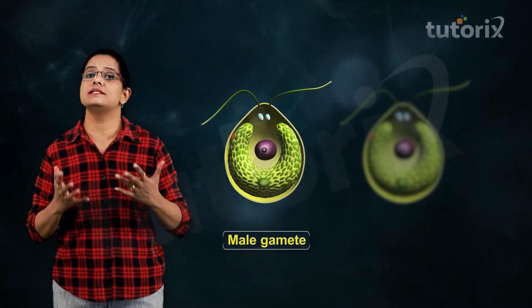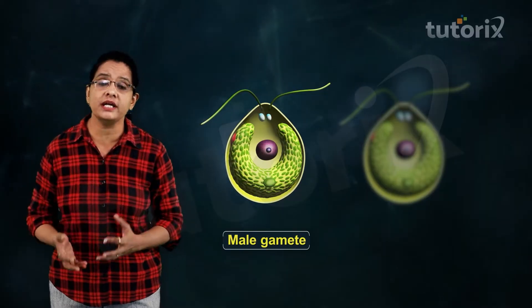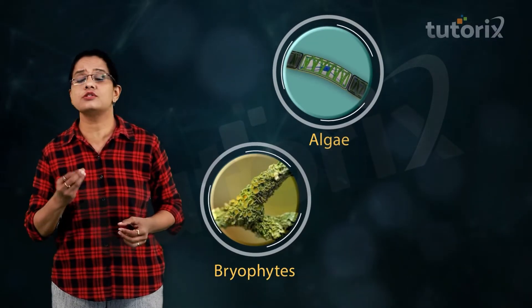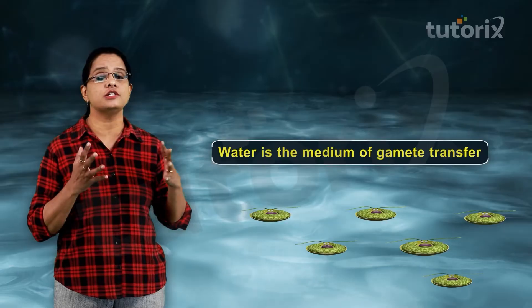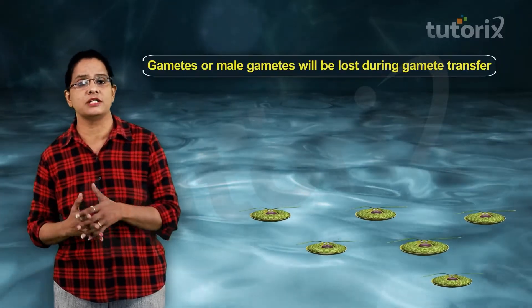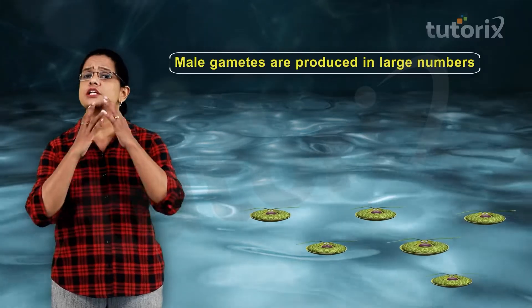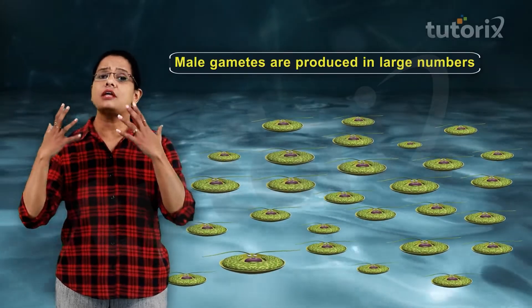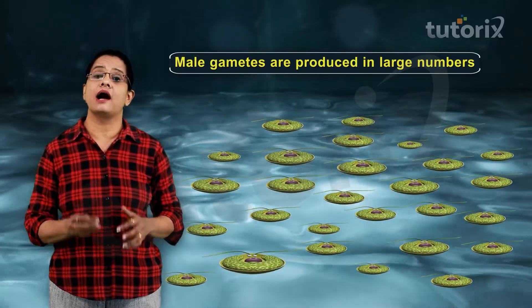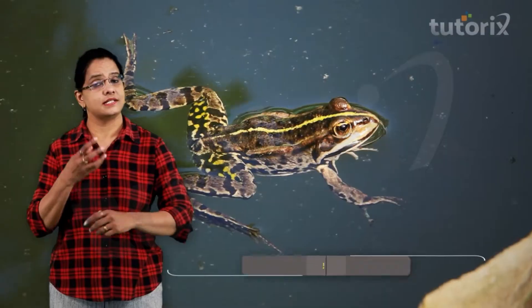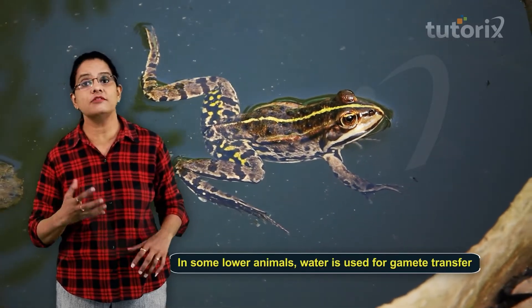In certain simple plants like some algae and most fungi, both gametes are motile. Simple plants like algae, bryophytes, and some pteridophytes utilize water as the medium of gamete transfer. Since motile male gametes are transferred through water, some are lost in the process — that is why male gametes are produced in very large numbers, several thousand times more than female gametes. In some lower animals, water is also used as the medium for gamete transfer.